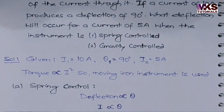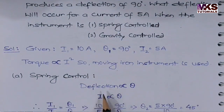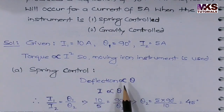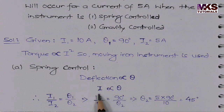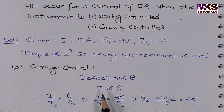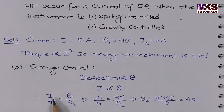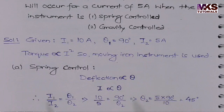For spring control, deflection is directly proportional to I². So, the ratio I₁²/I₂² equals θ₁/θ₂.